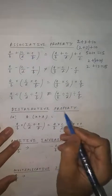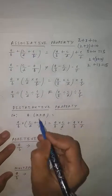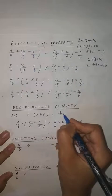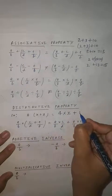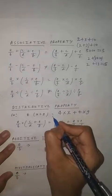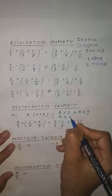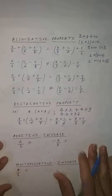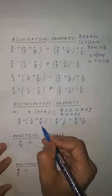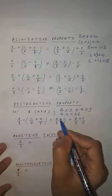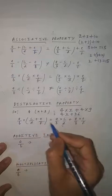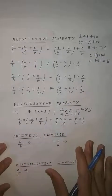Our next property is distributive property. Just say if 4 in bracket x plus 9 is given, you will write down 4 multiply by x plus 4 multiply by 9. This will become 4x plus 36. So this is your distributive property — meaning if a by b multiplied by c by d plus e by f in one bracket, then you write a by b multiply by c by d plus a by b multiply by e by f.